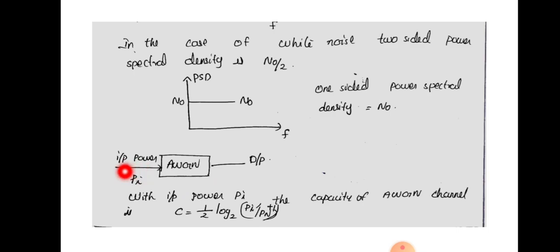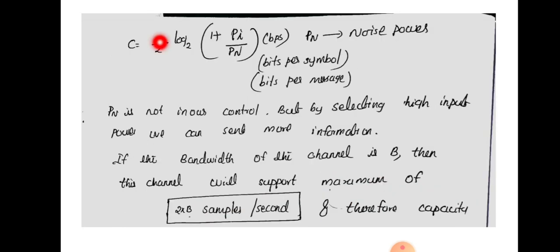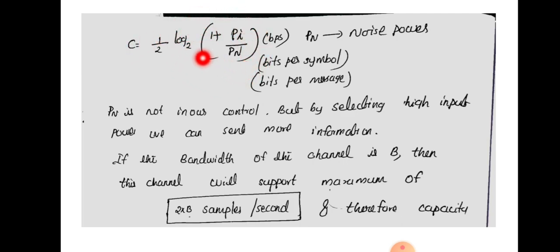For an AWGN channel with input signal power Pi, the channel capacity is given by C = (1/2) · log₂(1 + Pi/Pn), where Pi is the input power and Pn is the noise power. The unit is bits per second, bits per symbol, or bits per message. This is the capacity of a noisy channel, and it requires considering both the signal power and the noise power.